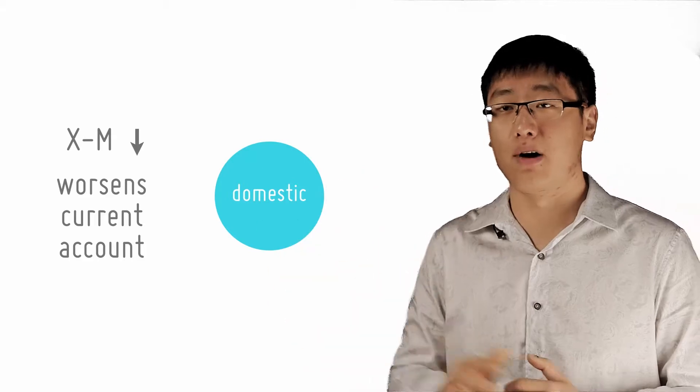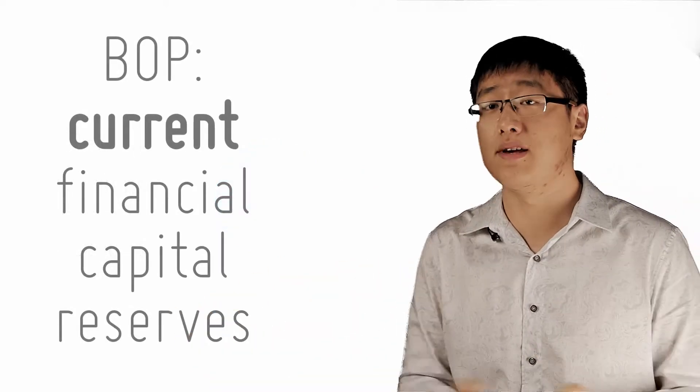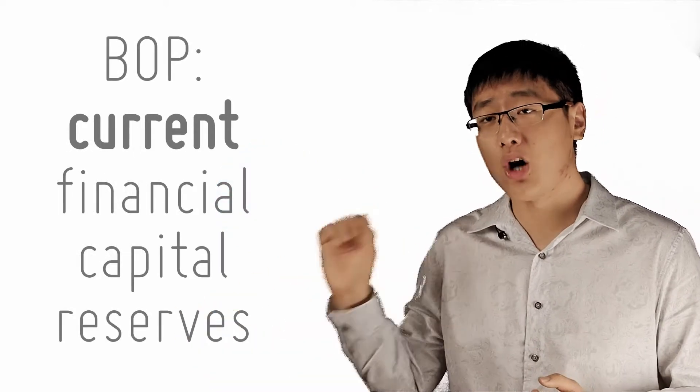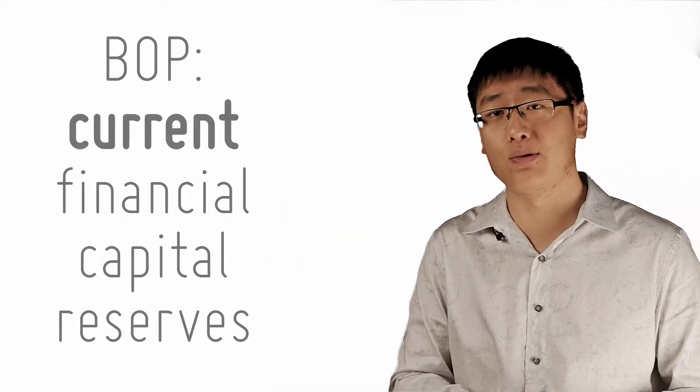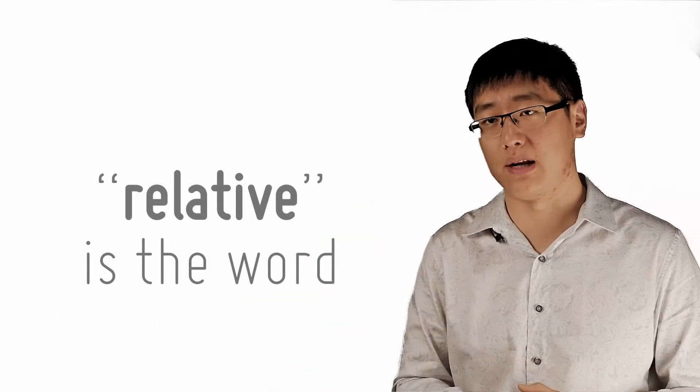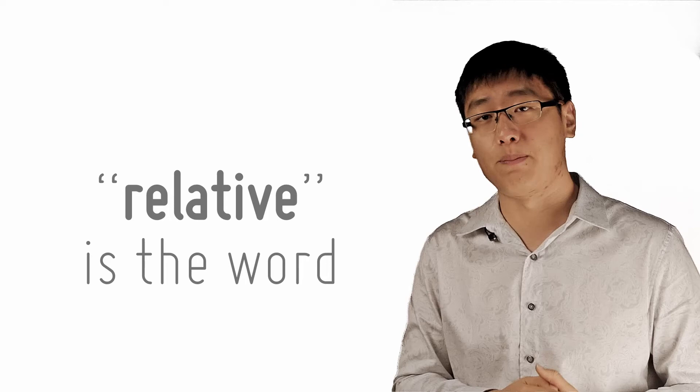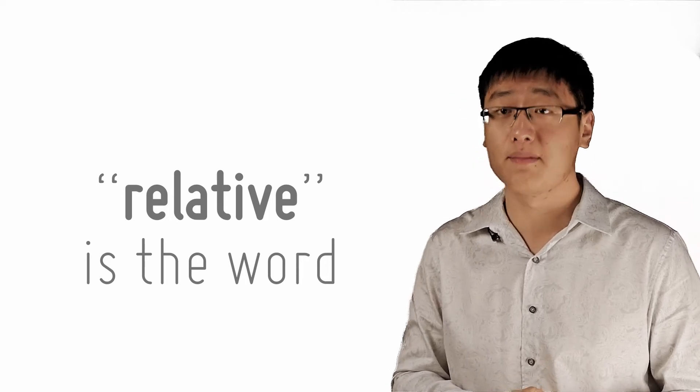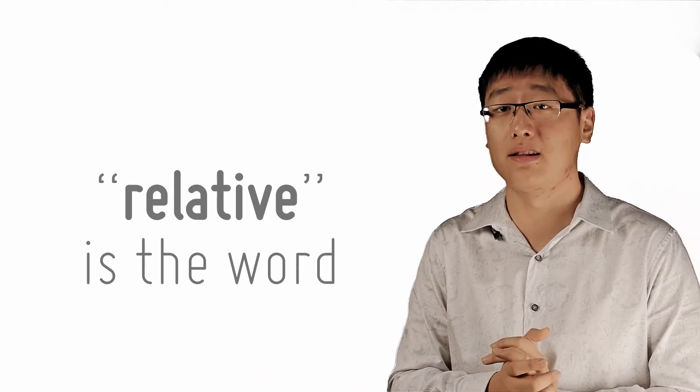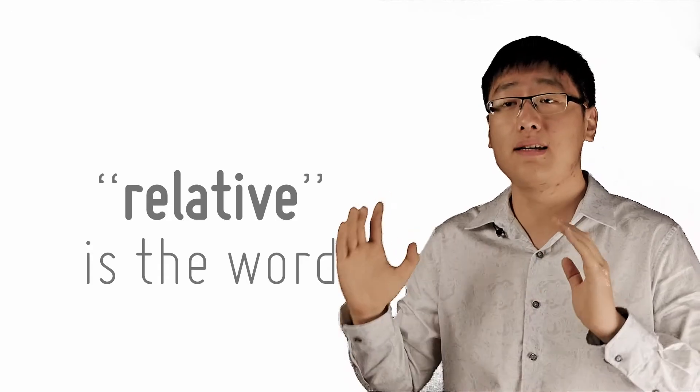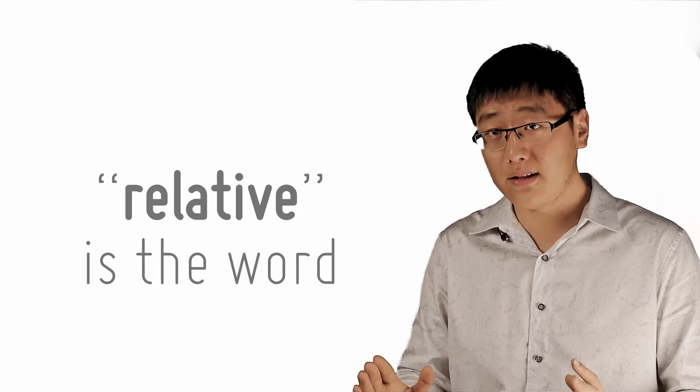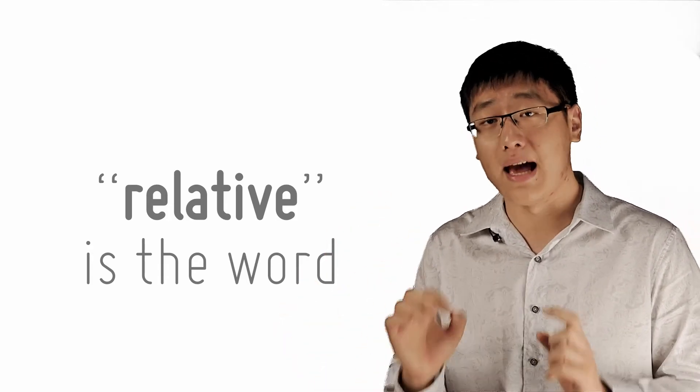Now, an expansionary monetary policy may make your interest rate lower than those of other countries, but this is not absolutely true because it still depends on the interest rates of your trading partners. Similarly, when you apply a contractionary monetary policy, it may cause your interest rates to be higher than those of your trading partners, but again, this depends on your relative interest rate and not the absolute one.